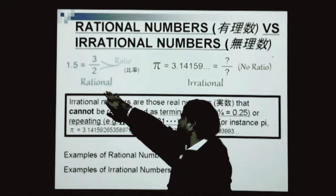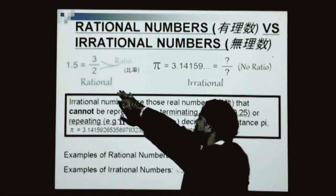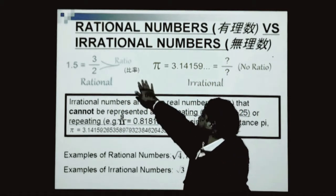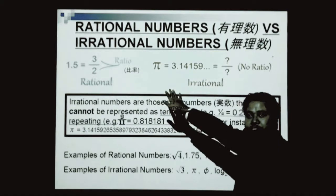For example, here, 1.5 can be written as 3 over 2, which is a ratio. A fraction is a ratio, as you already know.